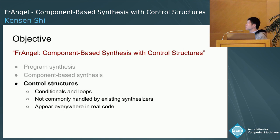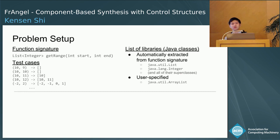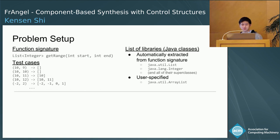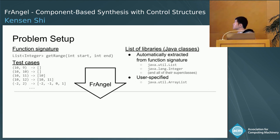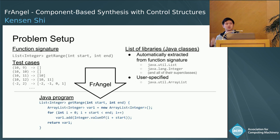This diagram illustrates our problem setup. The user is going to give us a Java function signature, some examples or test cases that illustrate the problem, and a list of libraries that can be used. Our synthesizer is called Frangel, and it will search for a Java program that has the given signature, uses methods from the given libraries, and has behavior consistent with all of the test cases.